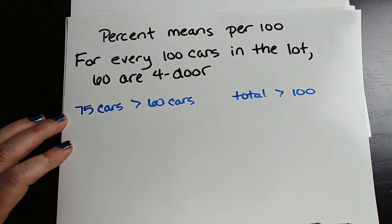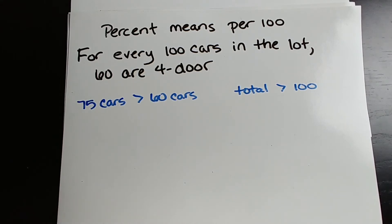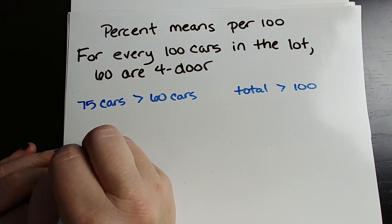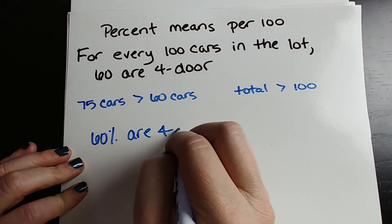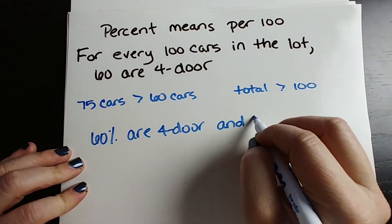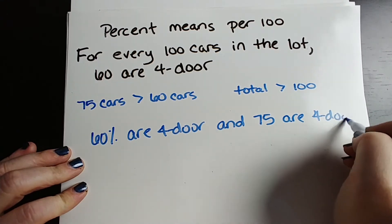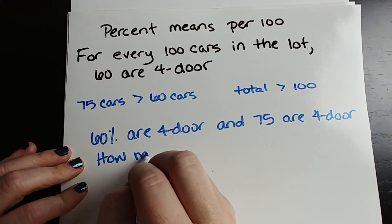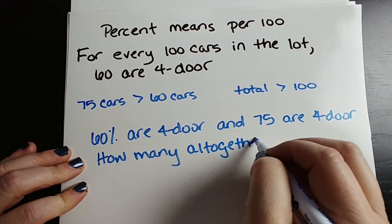Let's write into words — it's very important to put down in words what this problem is asking. It says 60% are 4-door, and 75 are 4-door, and it wants to know how many altogether.